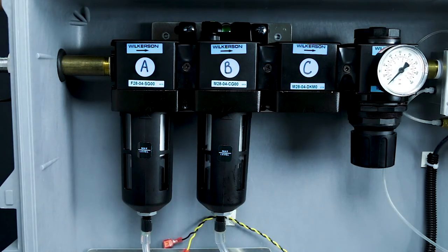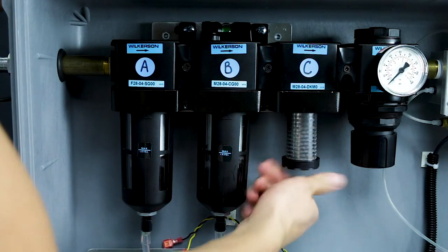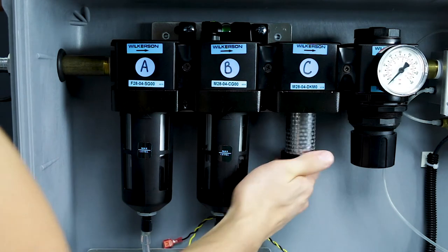Once again, align the bowl, push up and twist right until it stops. Reattach the 0.01 micron coalescing filter bowl.